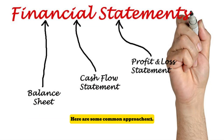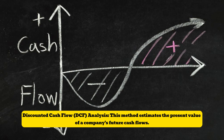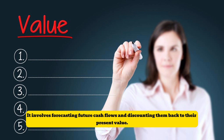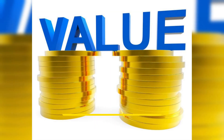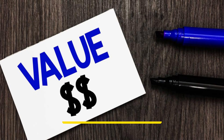Here are some common methods. 1. Discounted Cash Flow (DCF) Analysis: This method estimates the present value of a company's future cash flows. It involves forecasting future cash flows and discounting them back to their present value. The result is the intrinsic value of the stock.